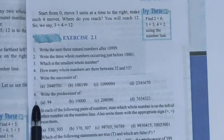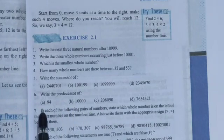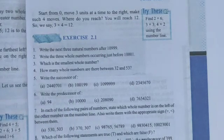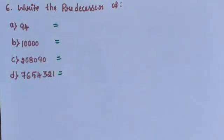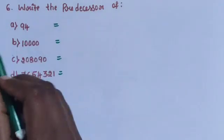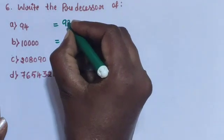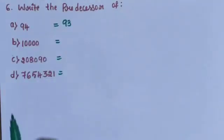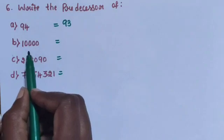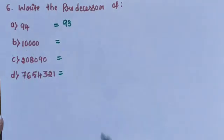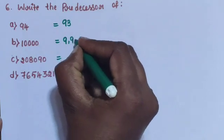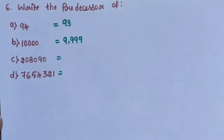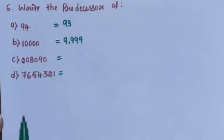Question number 6: Write the predecessors. Sub-question A: 94. The predecessor means the number before — 93 is the predecessor. Sub-question B: 10,000. The predecessor is 9,999.